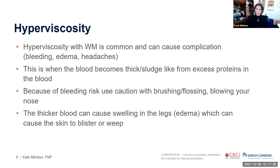Hyperviscosity with WM is common and can cause bleeding, edema, and headaches. The blood becomes fairly thick and sludge-like from excess proteins. Due to bleeding risk, patients should use caution with brushing teeth, flossing, and blowing their nose, as severe nosebleeds can occasionally require emergency care. For edema caused by hyperviscosity, the blood infiltrates tissue in the legs, sometimes causing the skin to blister. Recommendations include compression socks, diuretics if indicated, elevating the legs, exercise as tolerated, and limiting salt in the diet.